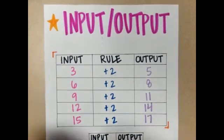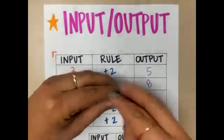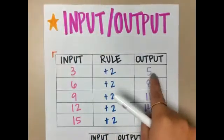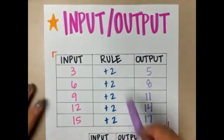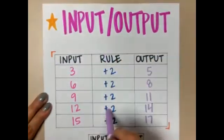Again, let's pretend that this is a machine. I put the number 3 in. It's rumbling plus 2. Out comes the number 5. Whatever number is being put in, I'm going to follow that rule.